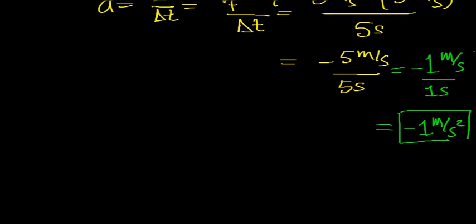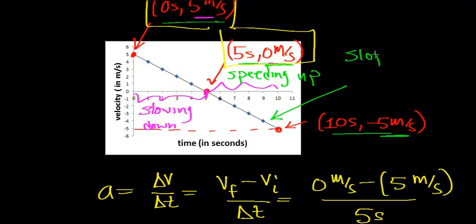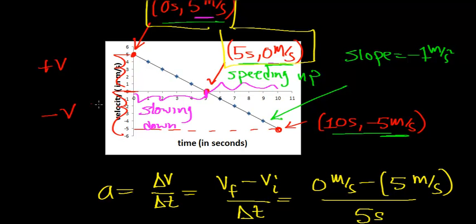We can use this acceleration to go back to our graph and confirm the slope equals negative 1 meter per second squared. A key rule is that when the velocity is above the time axis it's positive, and below it's negative. When you have positive velocity and negative acceleration, the object is slowing down. So the object goes from 5 meters per second, then 4, 3, 2, 1, and finally to 0 — slowing down to a stop over the first 5 second interval.